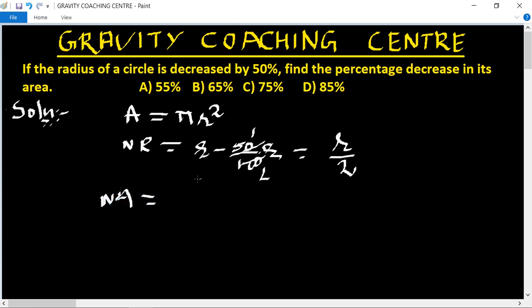New area is pi times the new radius squared. The radius is R by 2, so it's pi times R squared over 4.